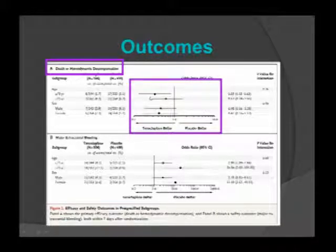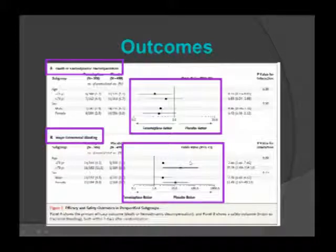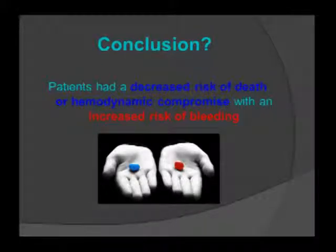While thrombolytic therapy improved outcomes, it came with the dreaded complication of major bleeding. The placebo group was better in every bleeding subgroup, a statistically significant finding. Patients had a decreased risk of death or hemodynamic compromise with thrombolytics but an increased risk of bleeding, making informed consent very difficult — you must offer reduced risk of clinical decompensation alongside a significant bleeding risk.